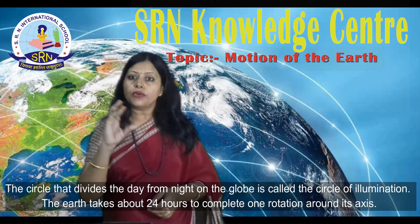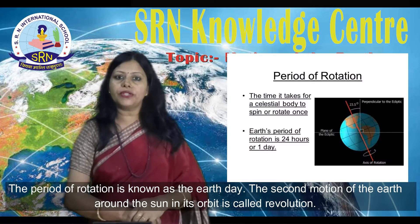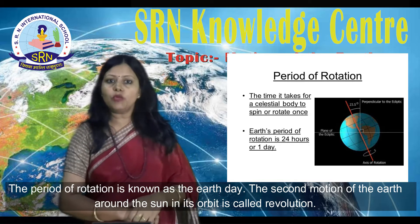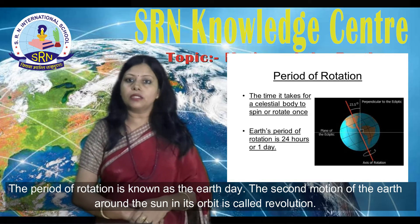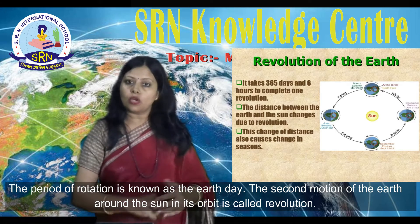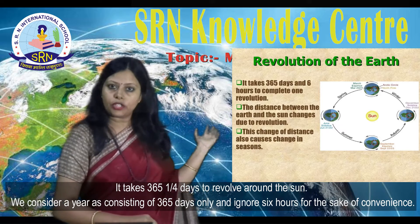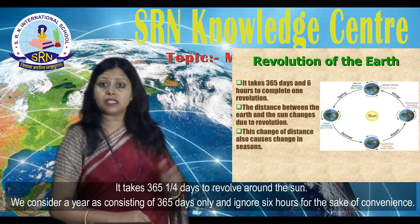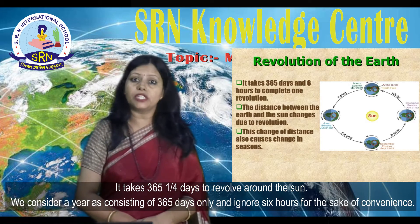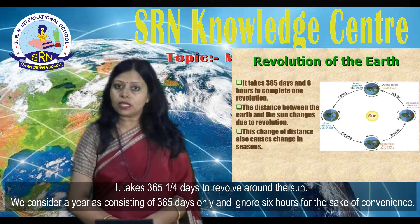The Earth takes about 24 hours to complete one rotation around its axis. The period of rotation is known as the Earth day. The second motion of the Earth around the Sun in its orbit is called revolution. It takes 365 and one-fourth days to revolve around the Sun.